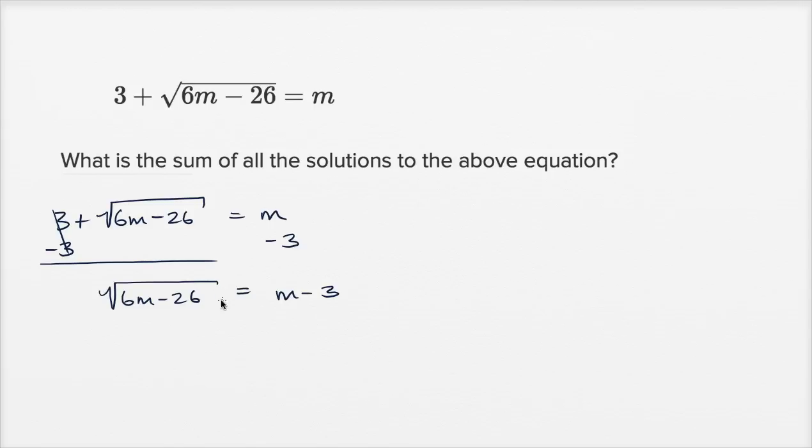Now, to get rid of the radical, we can square both sides of this equation. So the square root of 6m minus 26 squared is going to be 6m minus 26. And then m minus three squared, that's going to be m squared minus 6m, that's minus 3m minus 3m, plus nine.